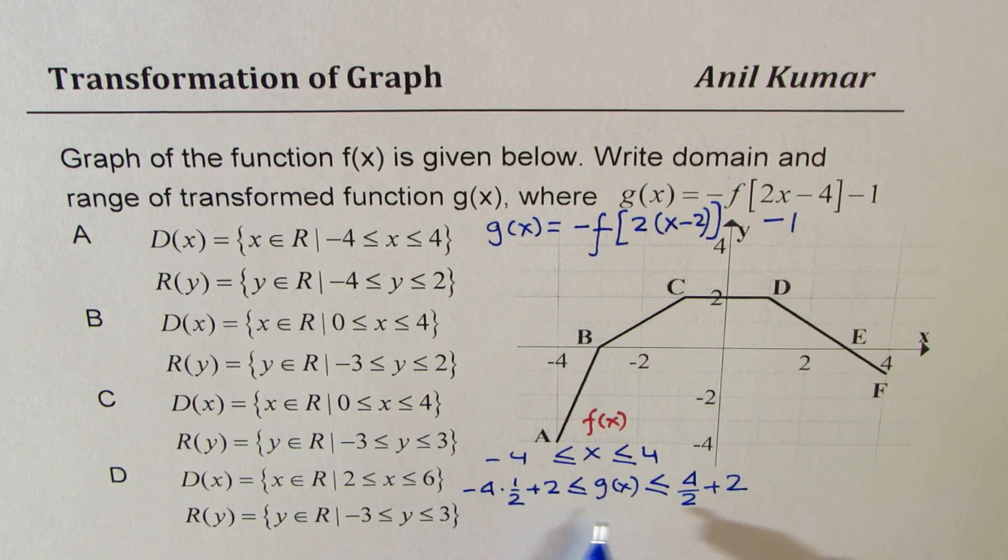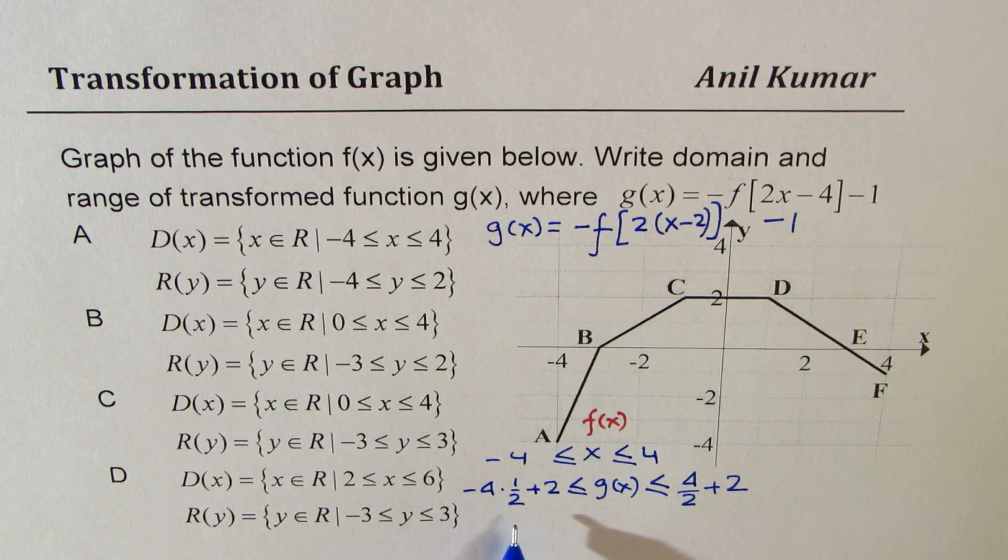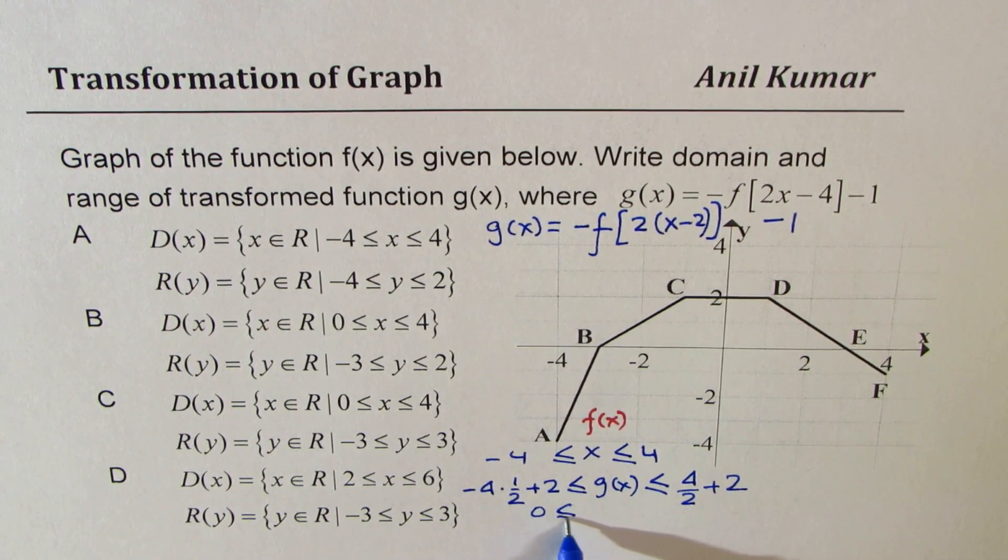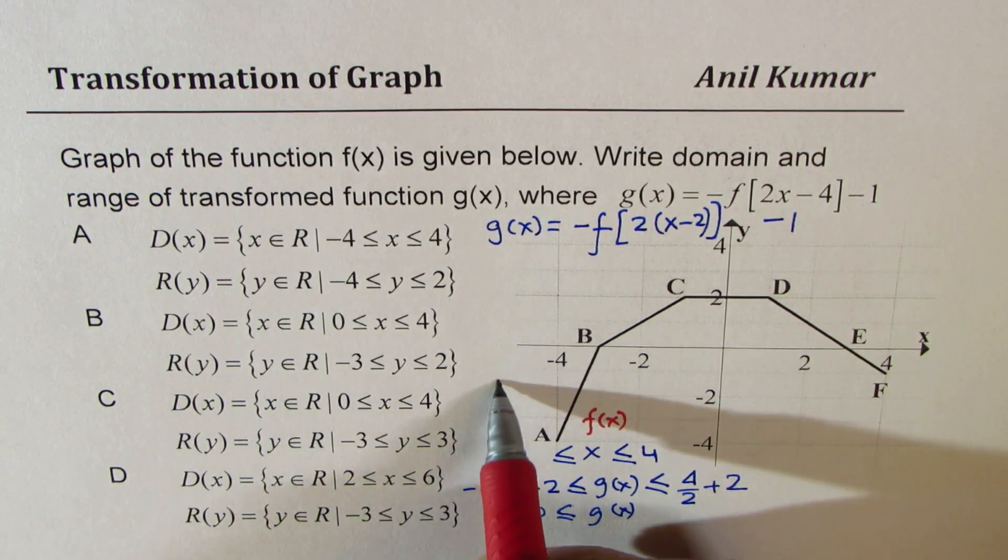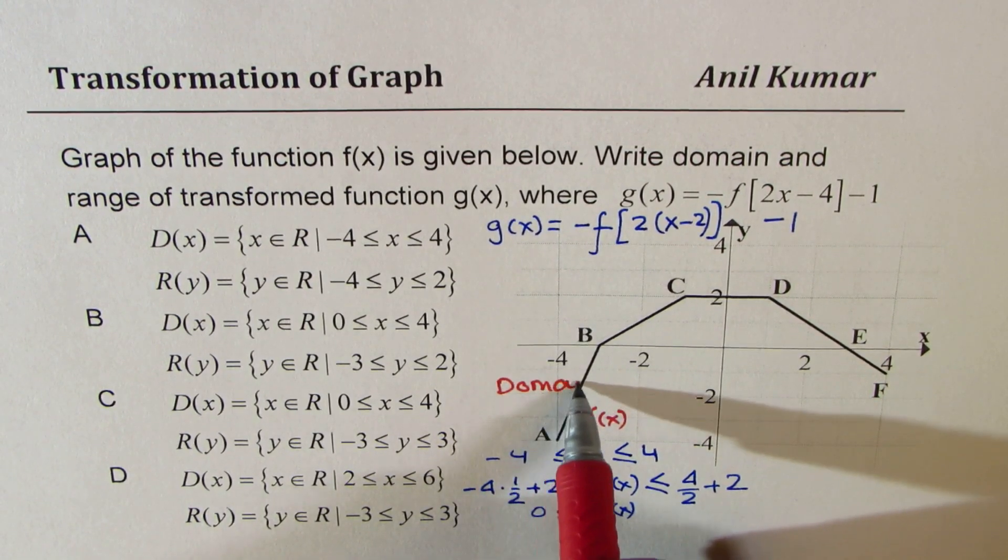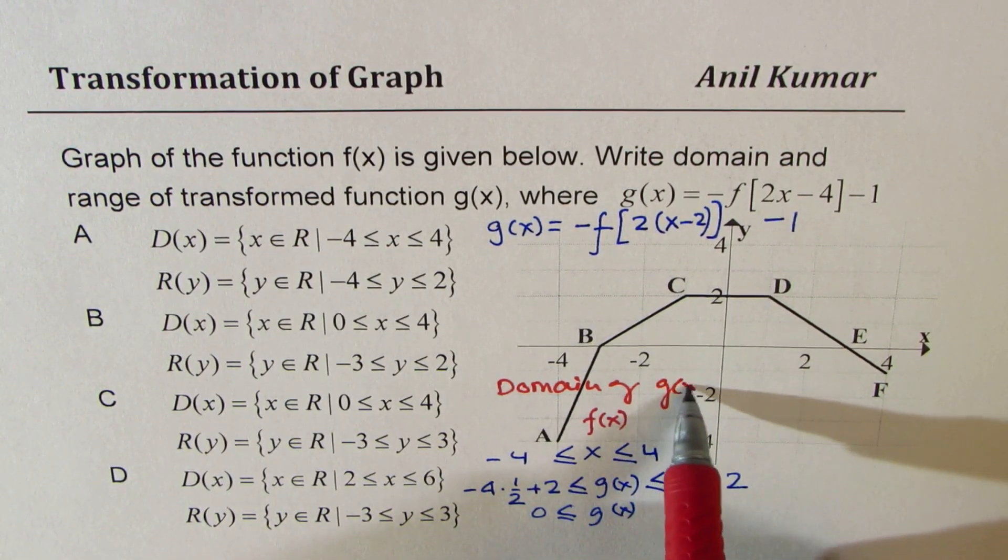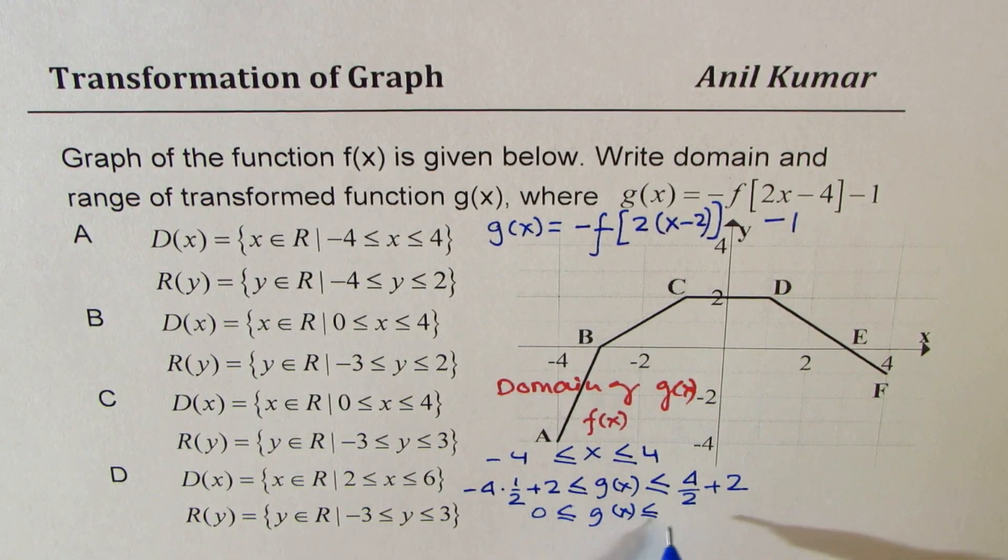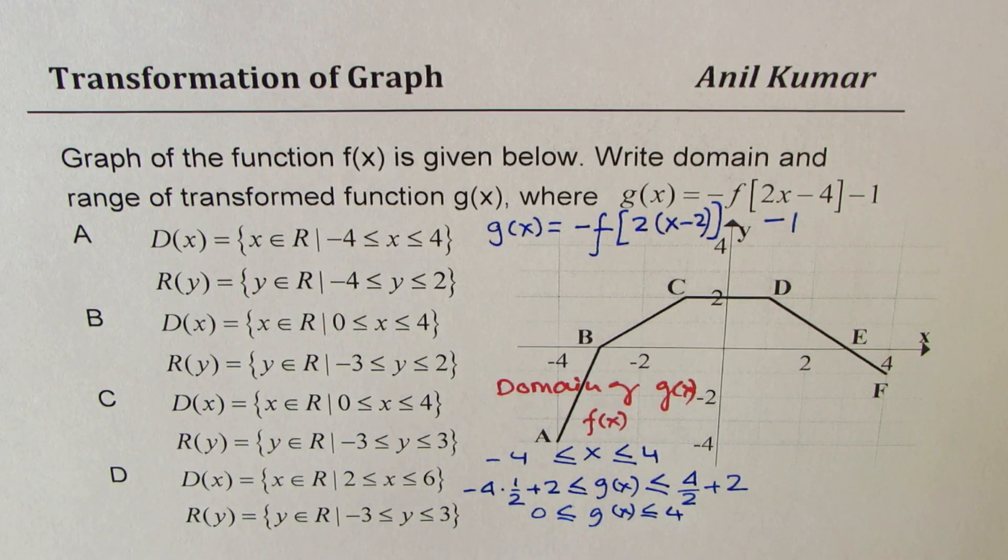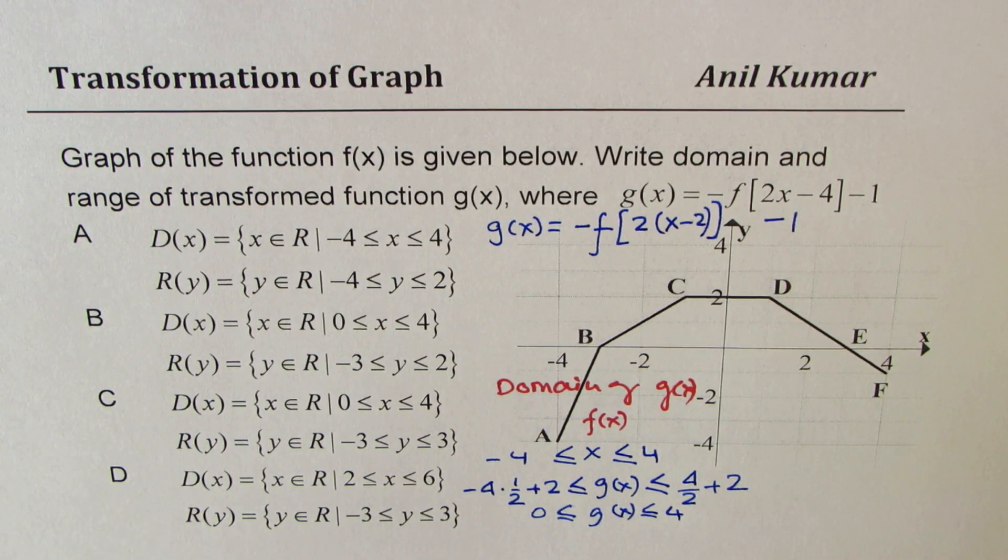So you could actually straight away write domain without even doing any transformations for the whole graph. So here, you get minus 4 half is 2 minus, which gives you 0. So as far as g of x, domain is concerned, we are doing domain first. That will become between 0 and 4. So you could straight away do the domain as I've done.